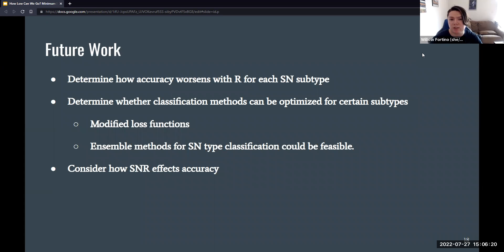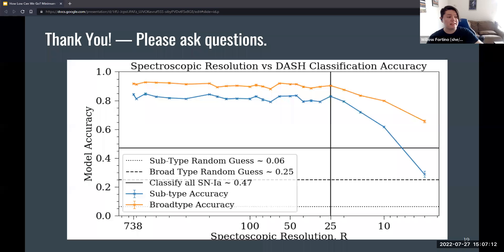For future work, what we want to do is we want to create some sort of data product that says this is the accuracy versus the spectrographic resolution for each supernova subtype. We'd also like to determine whether different classification methods can be optimized for certain subtypes. For example, modifying the loss functions or using ensemble methods for supernova type classification. It could be possible that we can have a whole battery of machine learning models to deploy to classify a particular supernova. And then finally, we need to consider how signal to noise ratio affects classification accuracy too. I would like to thank all of you for listening. Please ask questions, and I'm going to end on this plot, which I hope you find as interesting as I do. Thank you.